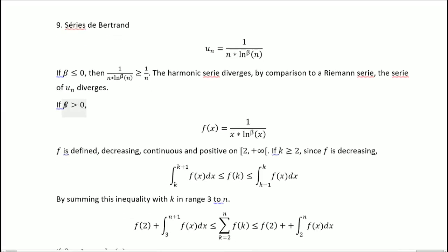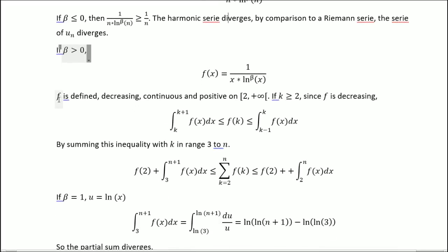If beta is greater than zero, then we have this function that is actually defined, decreasing because of 1 over x ln to the power beta of x, continuous and positive.